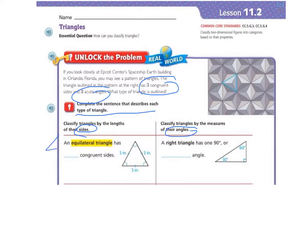First of all, it says an equilateral triangle has blank congruent sides. We need to think back to 4th grade, which I know was a long time ago for you. But back in 4th grade, if you remember, congruent means equal. So, it says that our triangle in Epcot Center has three congruent sides. And if you look at it, you can see that the sides are equal. They are congruent. And an equilateral triangle has three congruent sides.